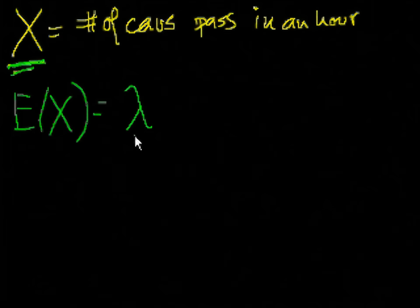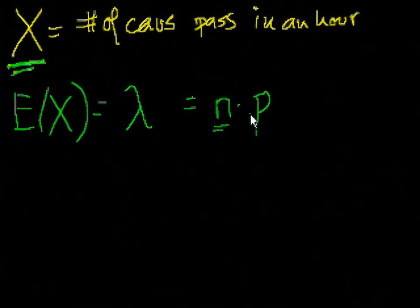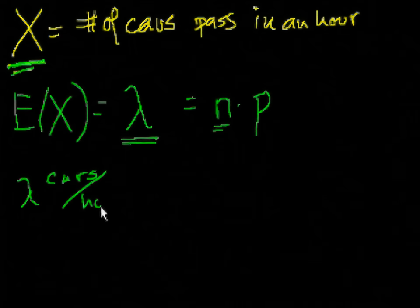We know the binomial distribution tells us that the expected value of a random variable is equal to the number of trials that that random variable is kind of composed of, right? Before in the previous videos we were counting the number of heads in a coin toss. So this would be the number of coin tosses times the probability of success over each toss. This is what we did with the binomial distribution. So maybe we can model our traffic situation something similar. This is the number of cars that pass in an hour, right?